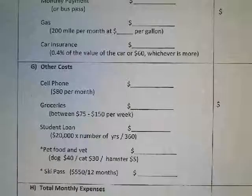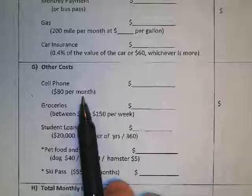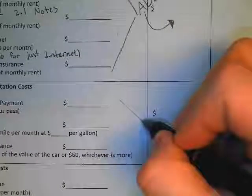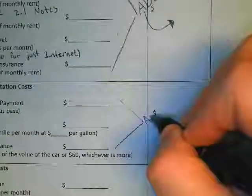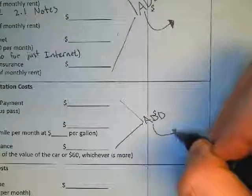From here, to find your transportation subtotal, you'll add up all these values and put that number right here.